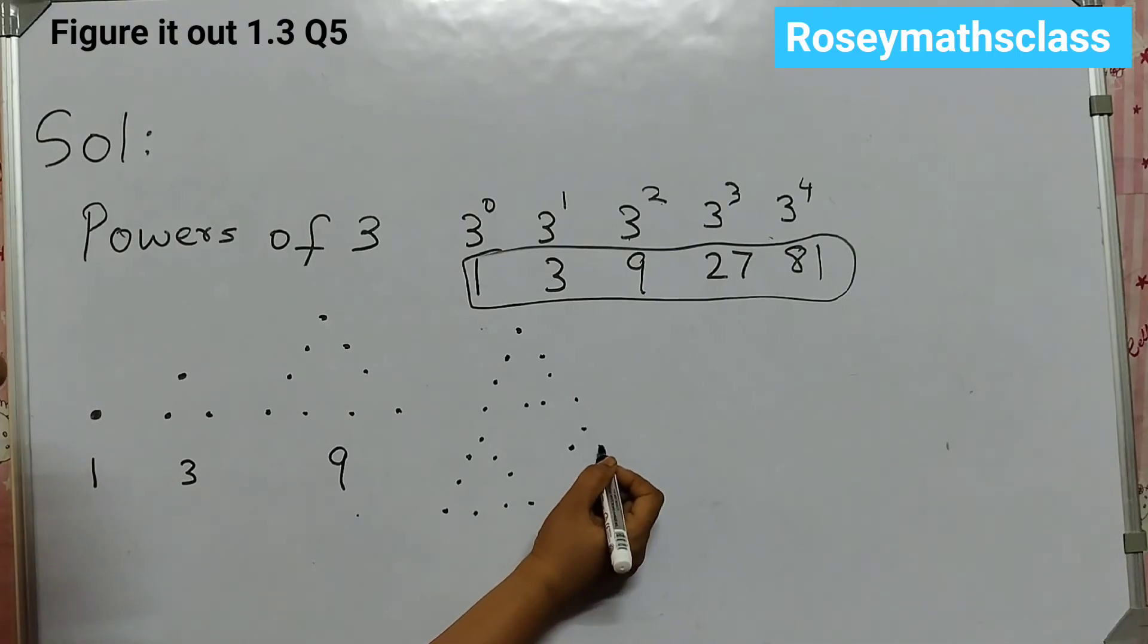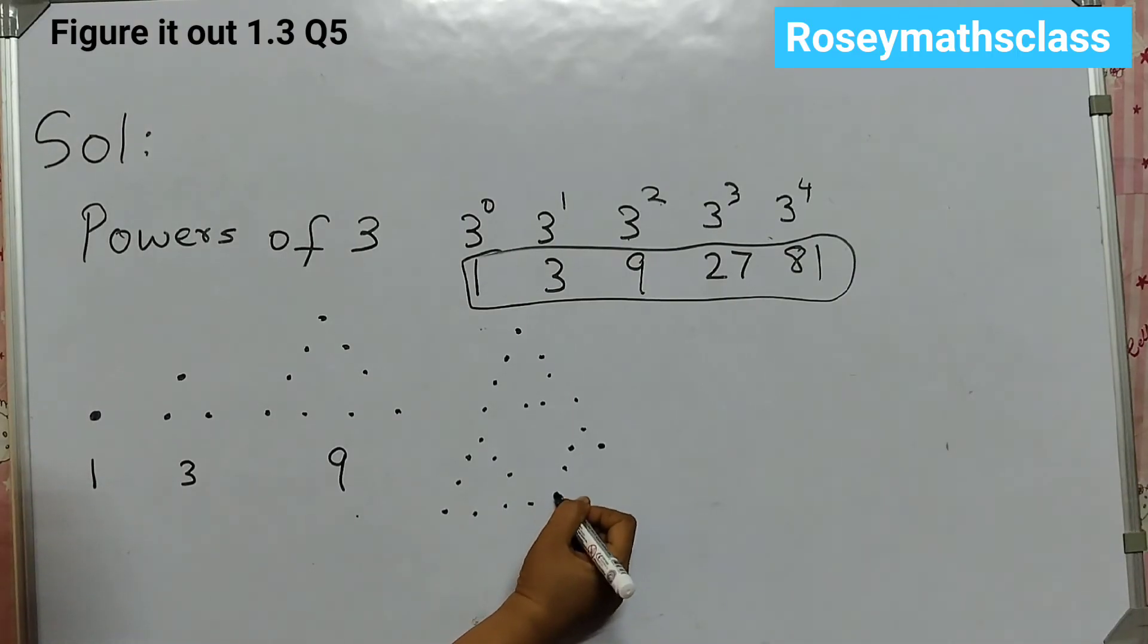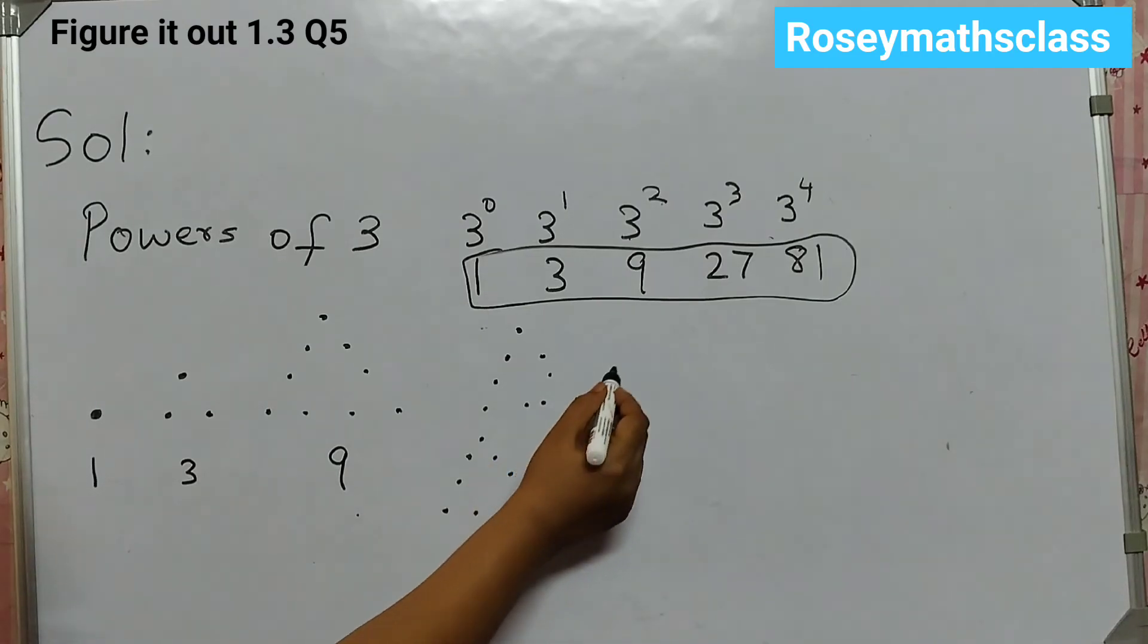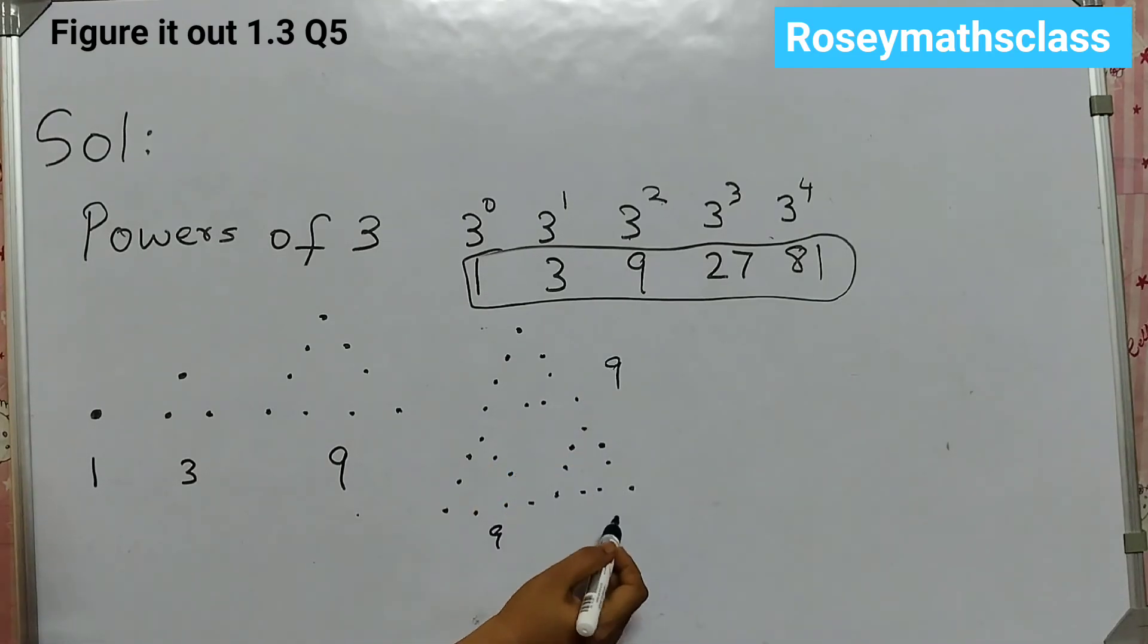Again, 1, 2, 3, 4, 5, 6, 7, 8, 9. So this is 9. This is 9. And this is 9. 9, 3 times. 27.